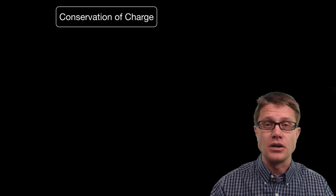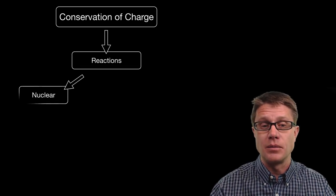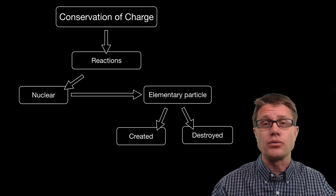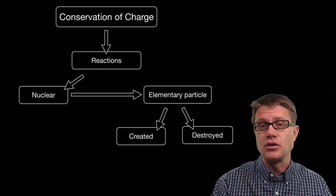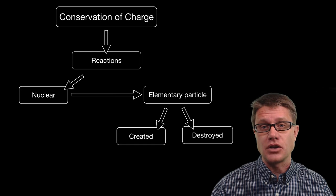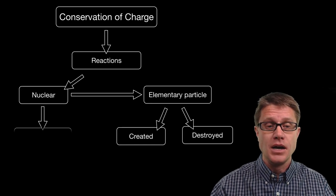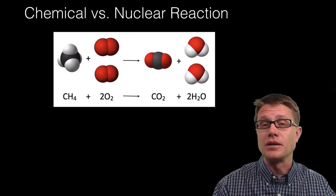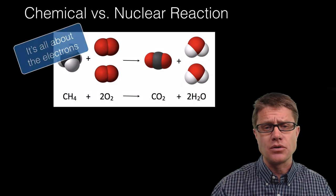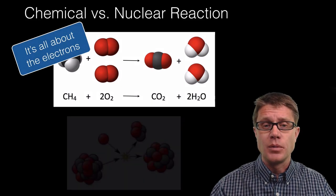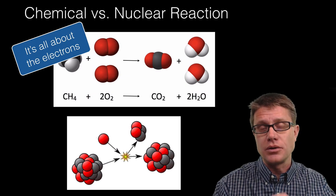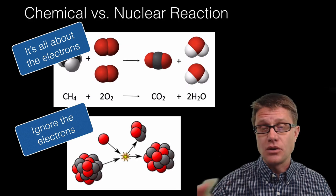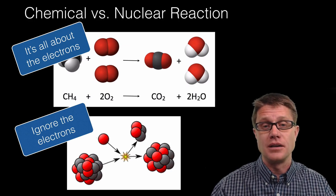Conservation of charge holds in nuclear reactions. Even if those reactions create or destroy elementary particles — if we create an electron or convert a neutron into a proton — we still conserve charge. If we make a positive we have to make a negative. In chemical reactions, like burning methane in a Bunsen burner, the electrons are most important. But in nuclear reactions we are dealing with the nucleus itself — the nucleons, the protons and neutrons — and we can pretty much ignore the electrons unless one is created in the process.